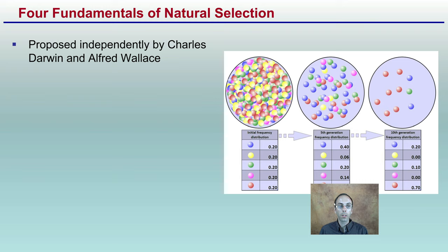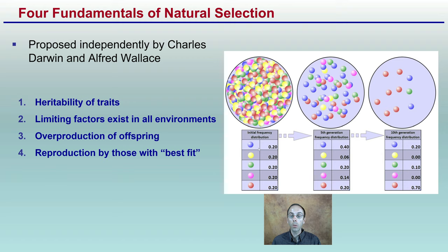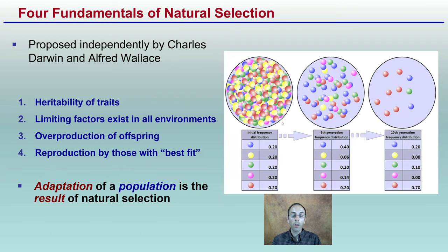The four fundamentals of natural selection, proposed by Charles Darwin and Alfred Wallace: heritable traits must be able to be passed on; limiting factors exist in all environments; overpopulation of offspring leads to competition; and reproduction by those best fit to the environment. We can see here that initial allele frequency of all colors is equal, but then there's a selection — in this case for the red circles. Over time, that allele frequency of the red becomes much greater, while pink and yellow are selected against. Adaptation of populations is the result of this natural selection process.